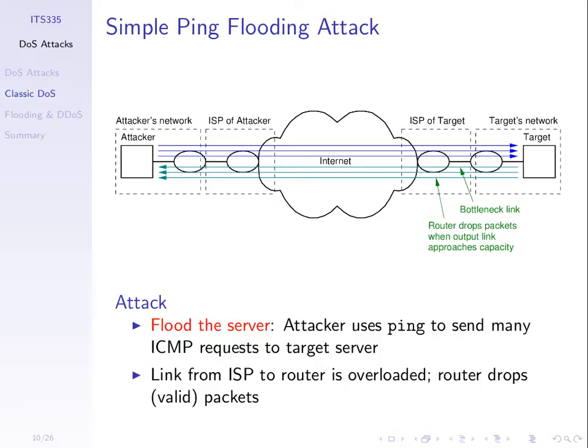This depends upon a bottleneck link leading up to the target. With the ping flooding attack, we use ping — a simple application where the source sends an ICMP echo request to some destination computer, and the normal behavior is that the destination replies with an ICMP echo reply. The attacker sends many of these ping requests to the target, not caring about the replies, just sending enough to overflow the link and fill up the capacity.